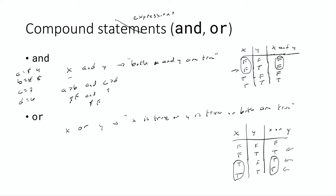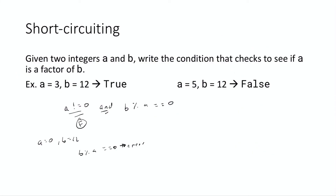There's also short circuiting for OR: when the left-hand condition is true, x OR y is already true regardless of y, so Python won't evaluate y. In summary: for AND, if the left is false, Python skips the right. For OR, if the left is true, Python skips the right. Python only evaluates as many expressions as it needs to — this makes your program faster and safer, since you can add checks like 'don't do this potentially dangerous calculation until I know it's safe.'